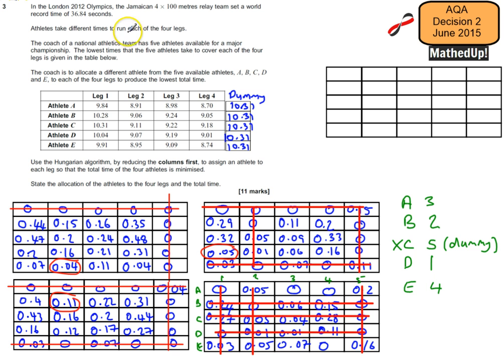Right, so I can now write down the actual times for these. Well, A3, so athlete A is going to run leg 3 in 8.98 seconds. And then we've got B2, 9.0 seconds, D1, 10.04 seconds, and E4, that's going to be 8.74 seconds.